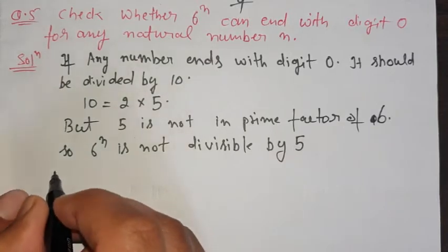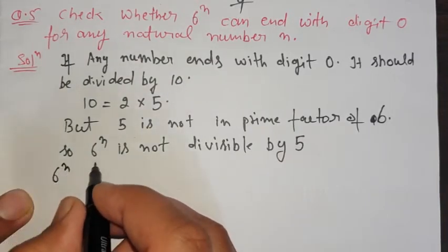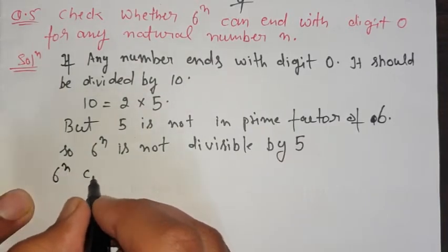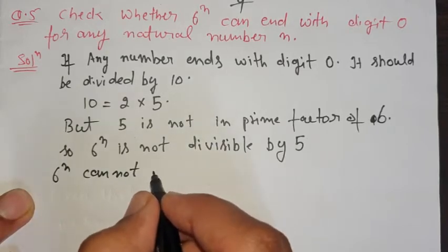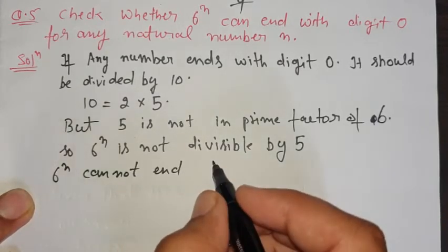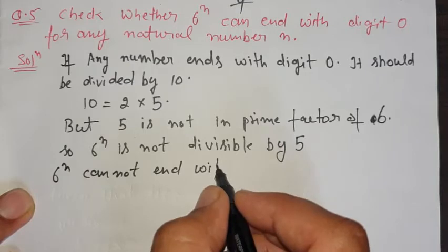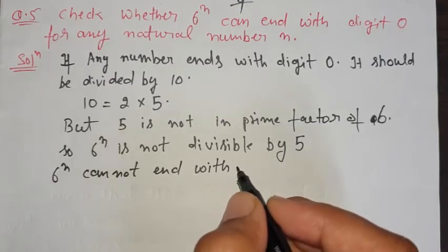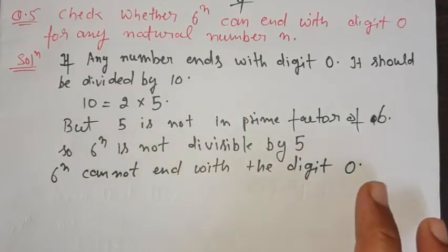Since 6^n is not divisible by 10, it will not have 0 as the unit digit. Therefore, 6 raised to the power n cannot end with the digit 0.